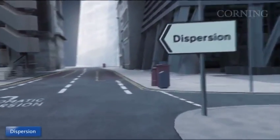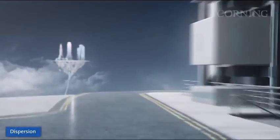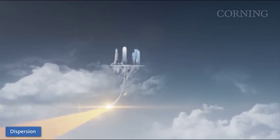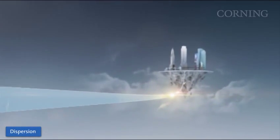Dispersion is the distortion of a signal along the fiber length. This occurs because different spectral components of the optical signal in the optical fiber travel at different speeds. In this example, different wavelengths are represented by the red and yellow light.